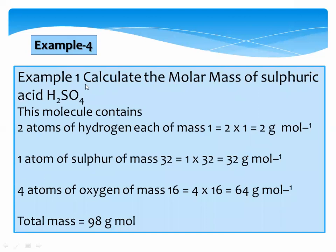Example 4: Calculate the molar mass of sulfuric acid. This molecule contains 2 atoms of hydrogen, each of mass 1 — so 2 × 1 = 2 g/mol. It contains 1 atom of sulfur of mass 32 — so 1 × 32 = 32 g/mol. It contains 4 atoms of oxygen of mass 16 — so 4 × 16 = 64 g/mol. Add all masses: 2 + 32 + 64 = 98 g/mol of sulfuric acid.